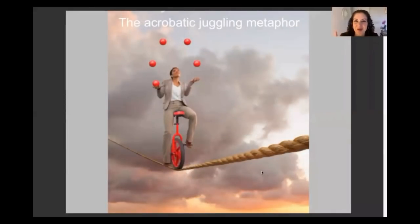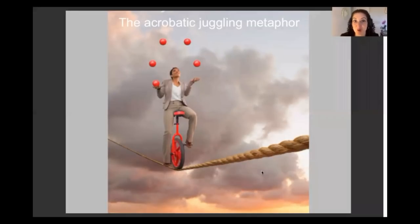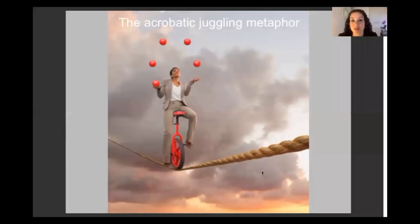I like to use an acrobatic juggling metaphor. Imagine that interpreting is like riding a motorcycle on a tightrope while juggling balls in the air. There's a lot going on in our brains when we're interpreting. It would be completely silly to just jump on that motorcycle, get on that tightrope, and try to juggle all at once.